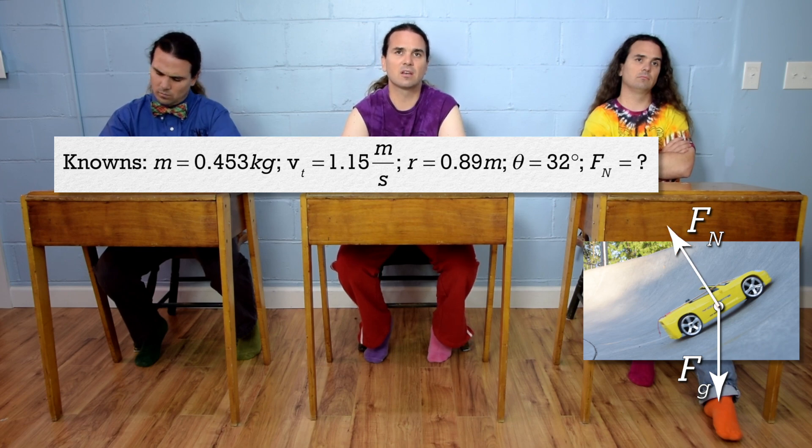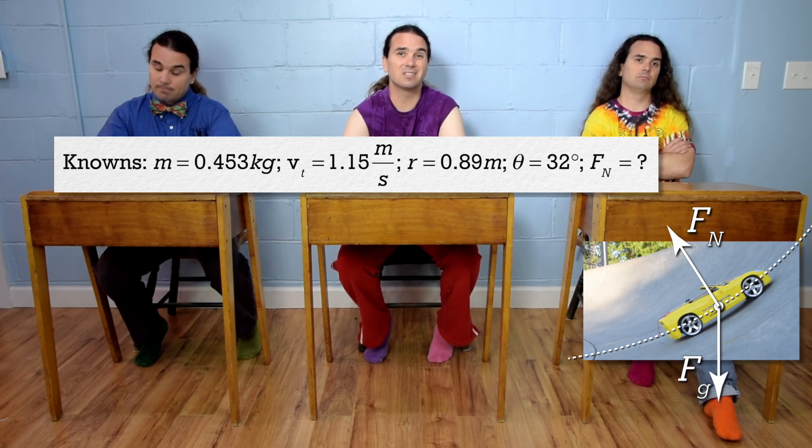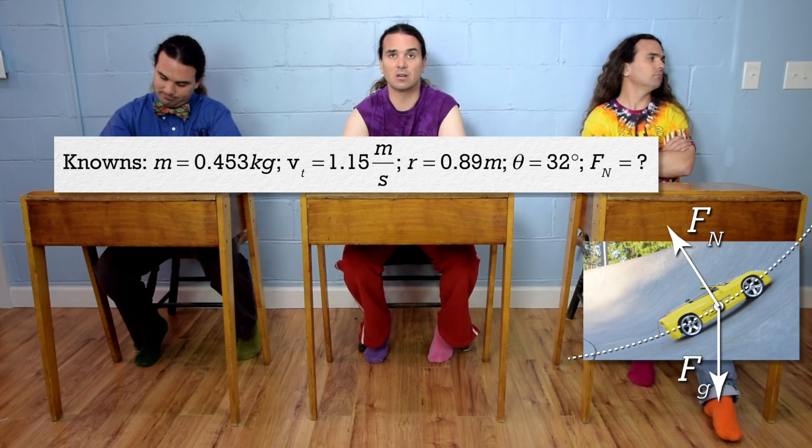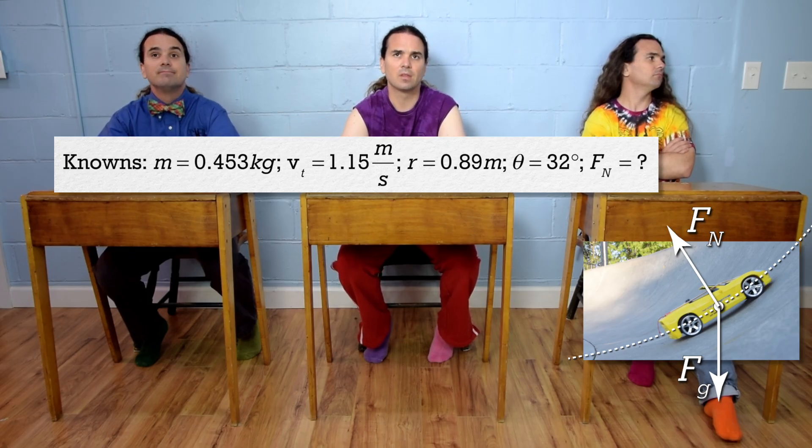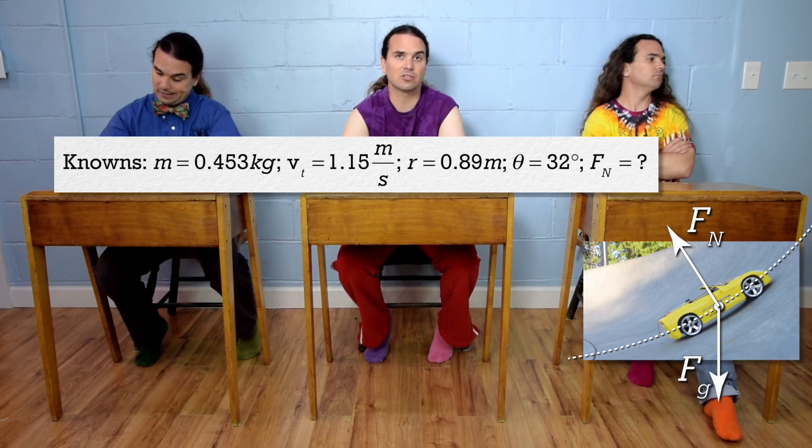So, let's break forces into components. The car is moving in a circle, so we need to break forces into components in the in direction and a direction which is perpendicular to the in direction, which is, in this case, tangent to the circle or in the tangential direction. The force normal is in the in direction, so we don't need to break that into components. That means we need to break the force of gravity into components in the in direction and the tangential direction.